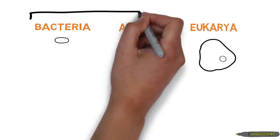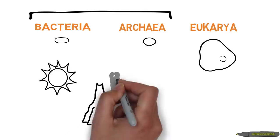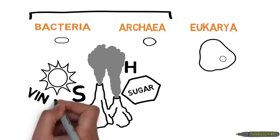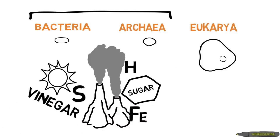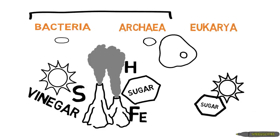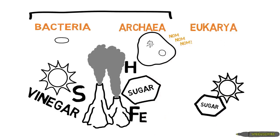Both bacteria and archaea can obtain energy from a multitude of sources such as sunlight, deep-sea vents, sugar, sulfur, hydrogen, vinegar, and iron. Most eukaryotic microbes gain energy from more familiar sources such as sunlight and sugars, and can even prey on smaller bacteria and archaea.